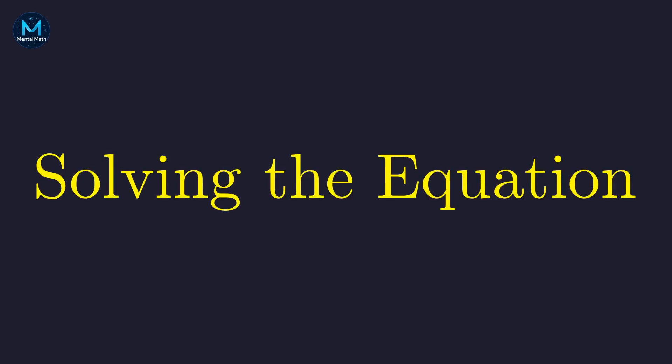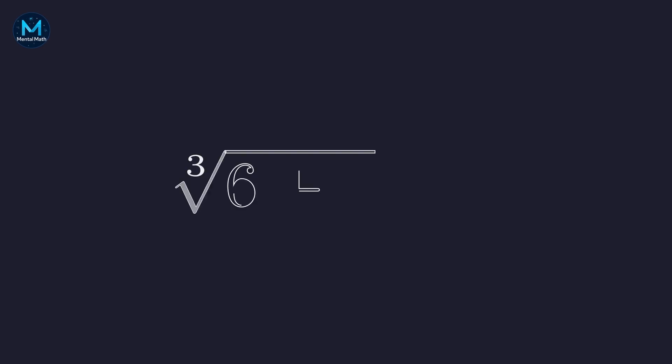Now we have a clean algebraic equation to work with. Here's our equation. To solve for x, we need to eliminate this cube root. The inverse of a cube root is cubing, so let's cube both sides.